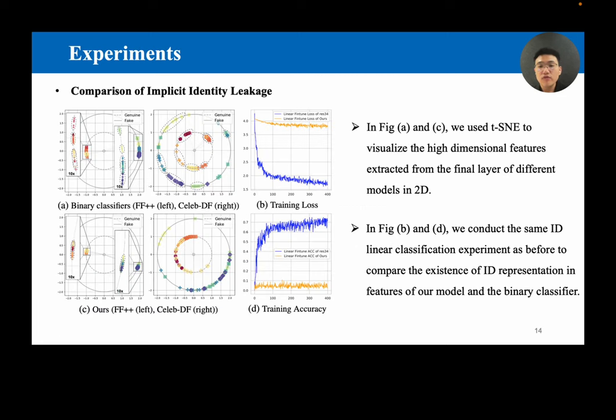In experiments, we first compared our model with a binary classifier in terms of the phenomena of implicit identity leakage. In figure A and C, we used TSNE to visualize the high-dimensional features extracted from the final layer of different models in 2D space. Each point represents the features of an image. Different markers of points represent features of images with different identities. Results show that compared with binary classifiers, features of different identities in our model were visually inseparable and overlapped with each other.